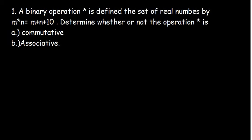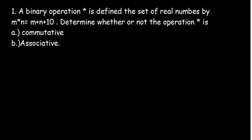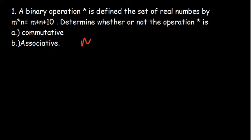We are going to answer two questions from binary operations. The symbol for the binary operation doesn't matter — don't be confused, it has the same meaning. In this case, our binary operation says m★n is equal to m plus n plus 10.